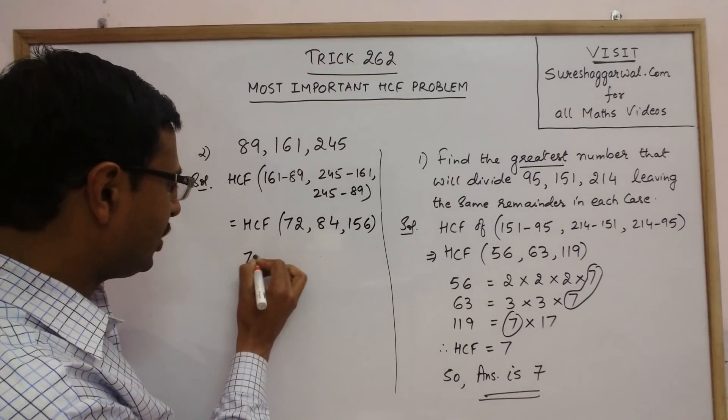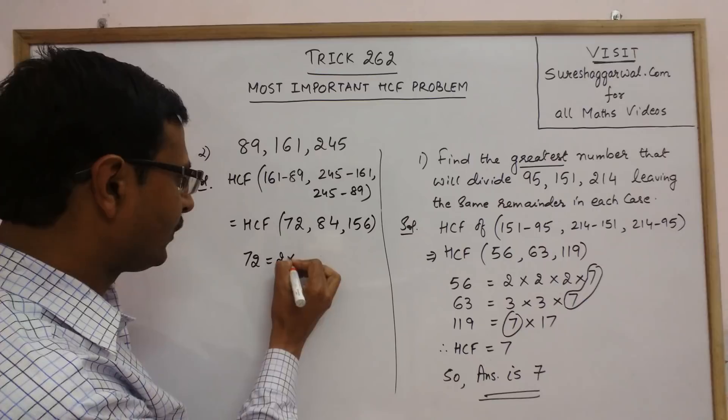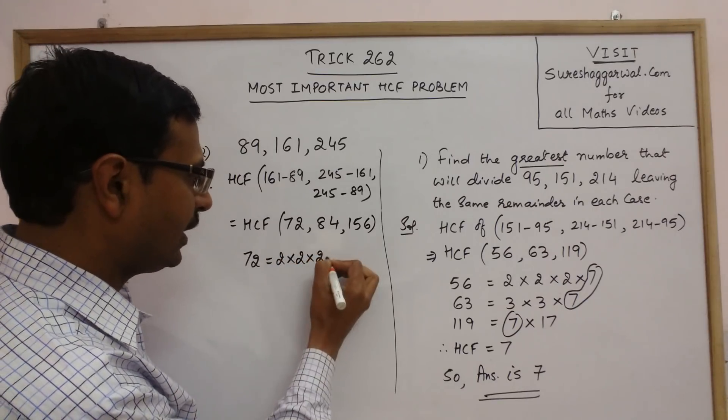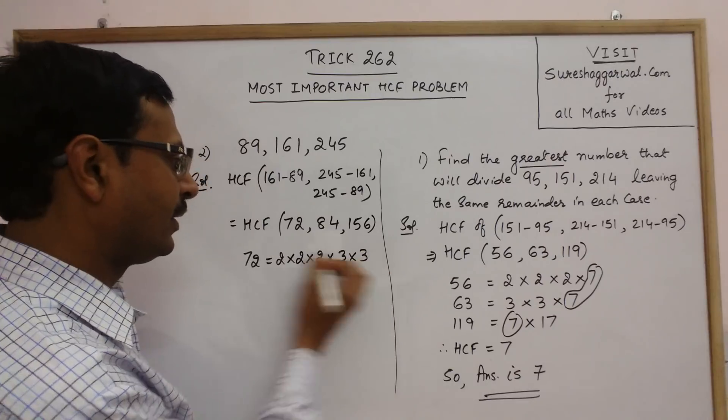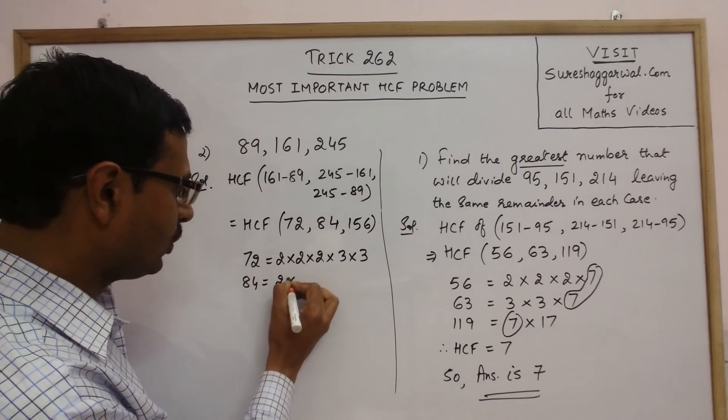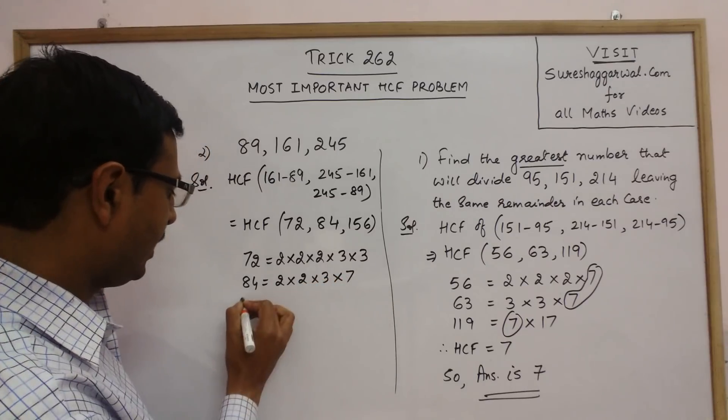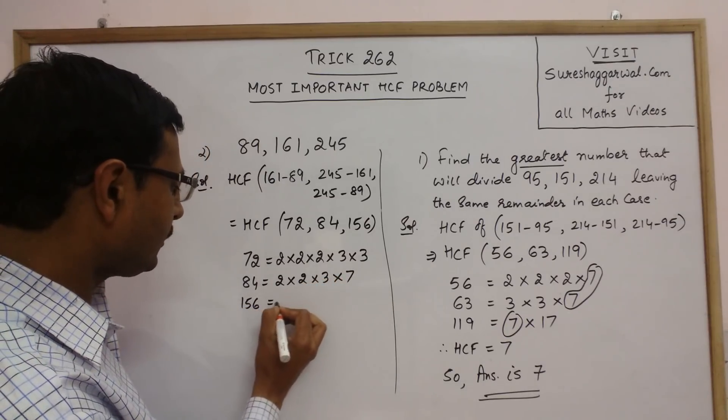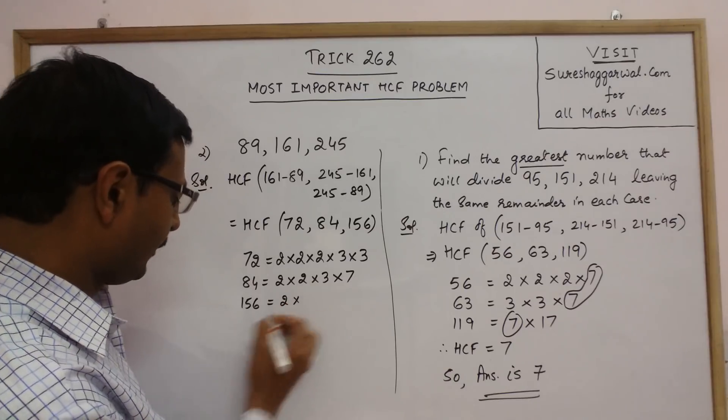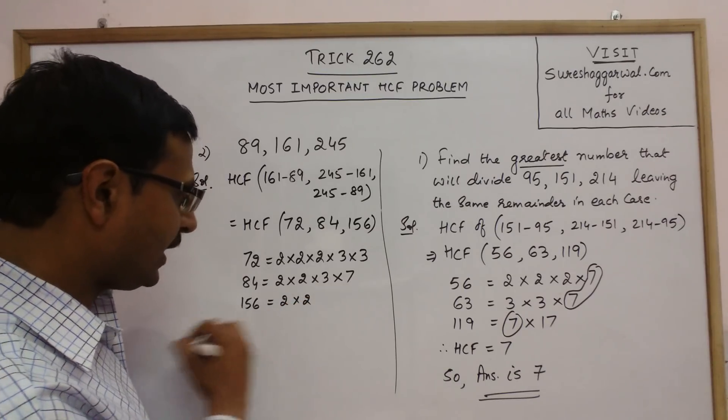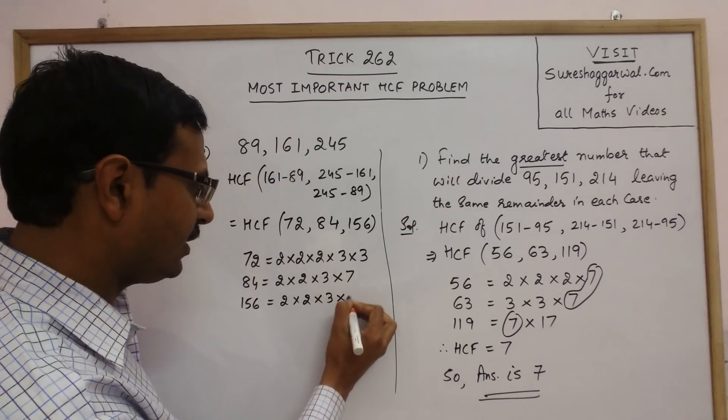For factors, 72 can be written as 2×36, 2×18, 2×9, 3×3. 84 can be written as 2×42, 2×21, 3×7. And 156, divided by 2 gives you 78, again 2, 39, 3 and 13.